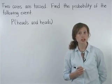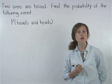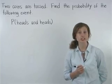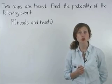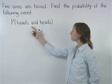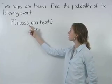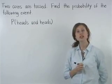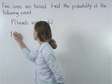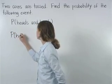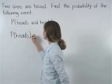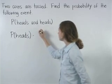Note that we're talking about the theoretical probability, because we're not actually going to toss the coins. So to find the probability of tossing a heads and a heads, we multiply the probability of tossing a heads times the probability of tossing a heads.